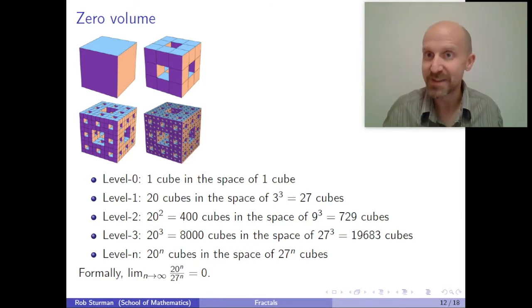In the end, I find that I have at level N, I've always got 20 to the N cubes, taking up the space where there should be 27 to the N. And so the volume of this thing is the fraction 20 to the N over 27 to the N, as N tends to infinity, as I keep doing this procedure. And I think you can see that 27 to the N grows much quicker than 20 to the N. And so formally, this limit is zero. There is no volume left in this process for the Menger sponge.